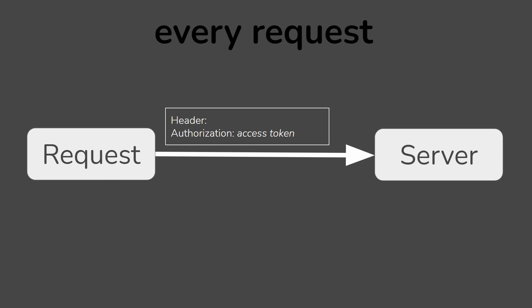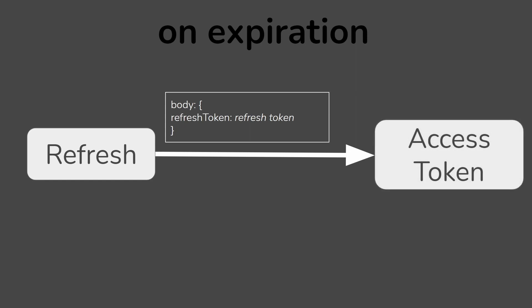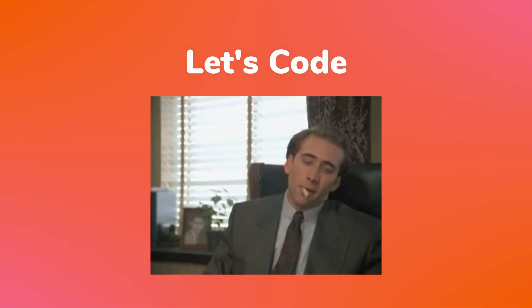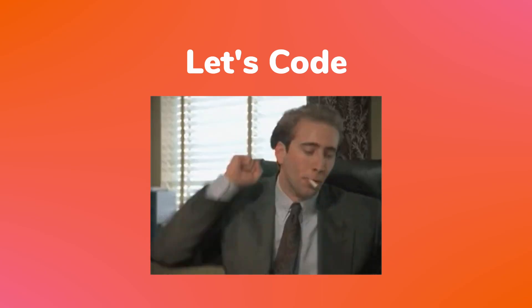However, access tokens are short-lived and usually only last 15 minutes to an hour. Once the access token expires, the application then calls the refresh endpoint of our server to get a new access token using the refresh token. With that out of the way, let's dive into coding this project.